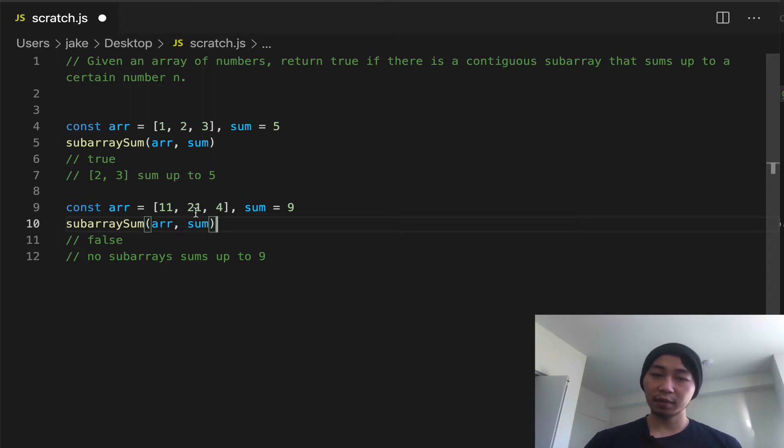11 plus 21 does not sum up to 9. 21 plus 4 doesn't sum up to 9. And if you include each of these numbers by itself, none of them is 9. And if you sum up everything, it does not equal 9.